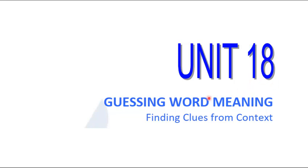Guessing word meanings simply means we are trying to find the meaning of a difficult word, and the way to do it is by finding clues from the context. In the TOEFL reading section, when a question asks about the definition, meaning, synonym, or antonym of a difficult word, the clues are available inside that reading text. We will find the clues from the context, and they are in the form of words.